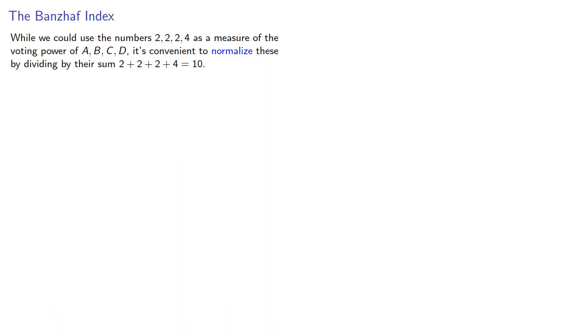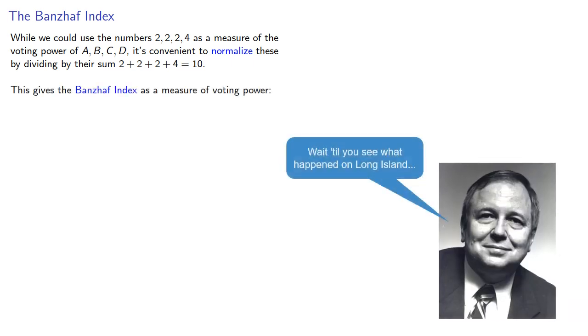While we could use the numbers 2, 2, 2, and 4 as a measure of the voting power of A, B, C, and D, it's convenient to normalize these by dividing by their sum 10. This gives the Banzhaf index as a measure of voting power.